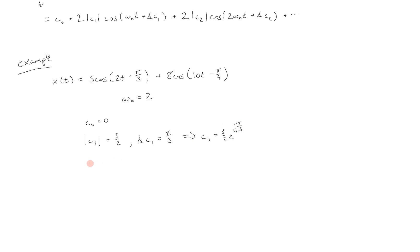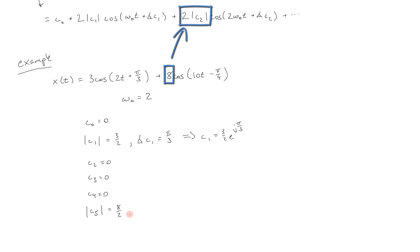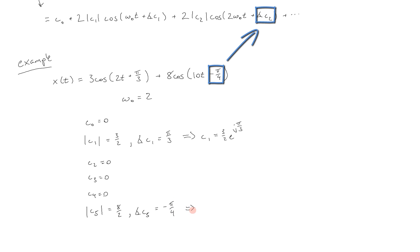We can keep going. c sub 2 is equal to 0 because there is no term with a cosine of 4t. Same thing with cosine of 6t. As we keep increasing k in front of omega naught — 1 omega naught, 2 omega naught, 3 omega naught, 4, and so on — there are no such terms until we hit 10, which is c sub 5. So c sub 3 is 0, c sub 4 is 0. But c sub 5 has an amplitude equal to 8 halves, or 4, and its phase — again just matching terms — is equal to negative pi fourths. Therefore, c sub 5 is equal to 4 e to the minus j pi fourths.